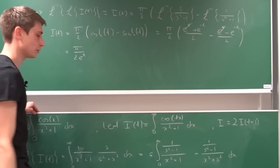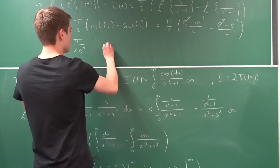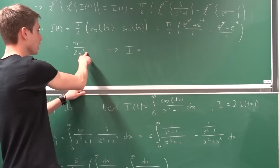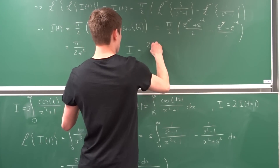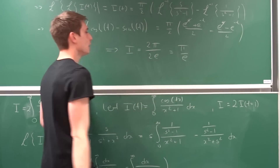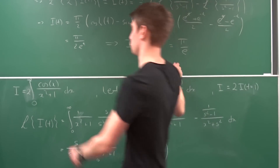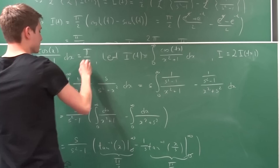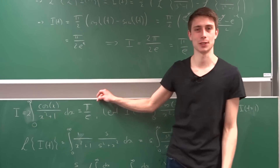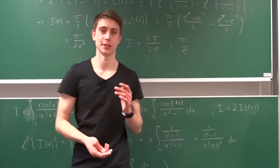We're not done yet — don't forget our original relationship. In order to get back to our original I, we need to set t equal to 1 and multiply by two. So we get two times pi over two times e to the minus 1, which is pi over e. And that's quite a beautiful result — pi over e! Our two most favorite transcendental numbers together.